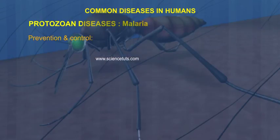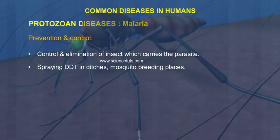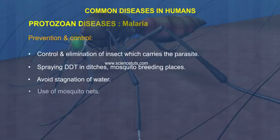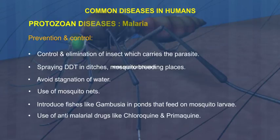Prevention and control: Control and elimination of the insect vector. Spraying DDT in ditches and mosquito breeding places. Avoid stagnation of water. Use of mosquito nets. Introduce fishes like Gambusia in ponds that feed on mosquito larvae. Use of anti-malarial drugs like chloroquine and primaquine.